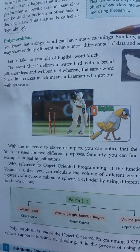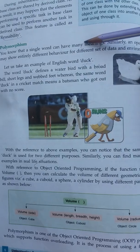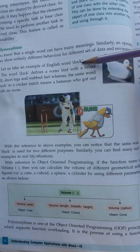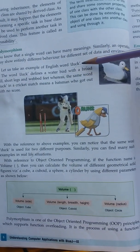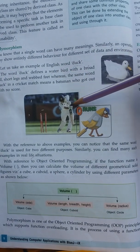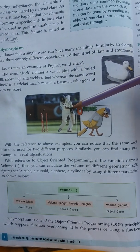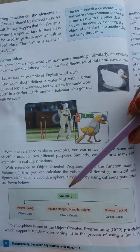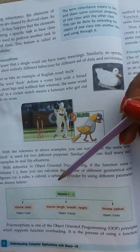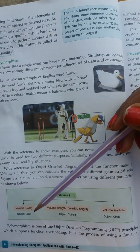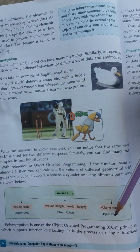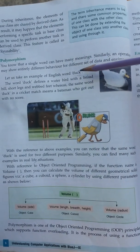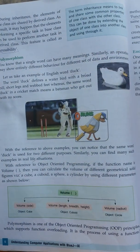The next topic is polymorphism. Polymorphism is a single word with different meanings. For example, 'duck' is a bird, but if a cricketer scores zero runs, that cricketer is also called a duck. In maths, if I'm talking about volume, we have the volume of a cube, cuboid, circle, and so on. A word with different meanings is known as polymorphism.